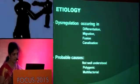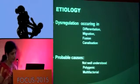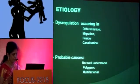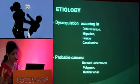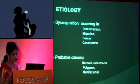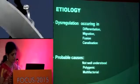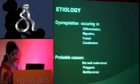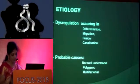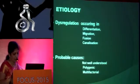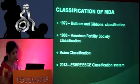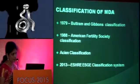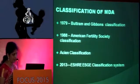Any dysregulation occurring in differentiation, migration, fusion, and canalization leads to lower genital tract anomalies. Probable causes are not well understood; it is polygenic and multifactorial. There are many different classifications of the Mullerian duct anomalies.